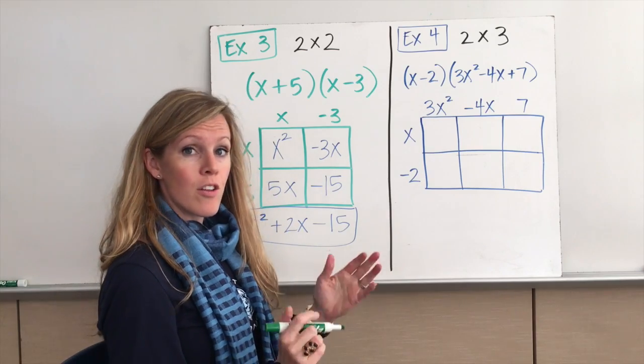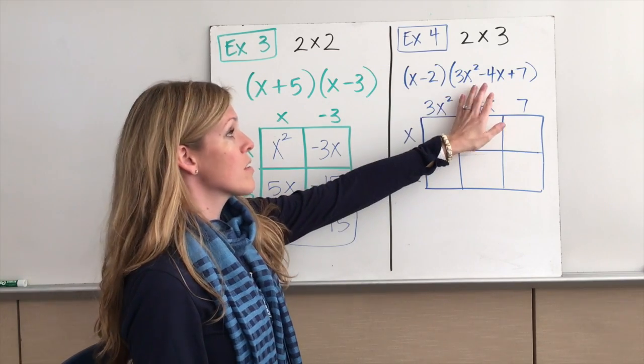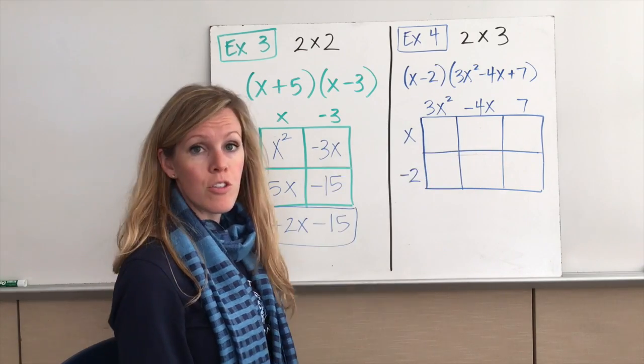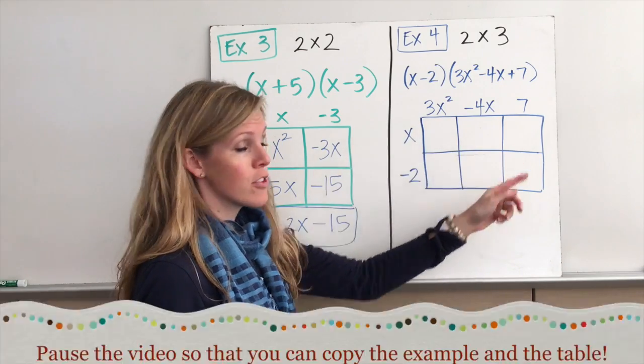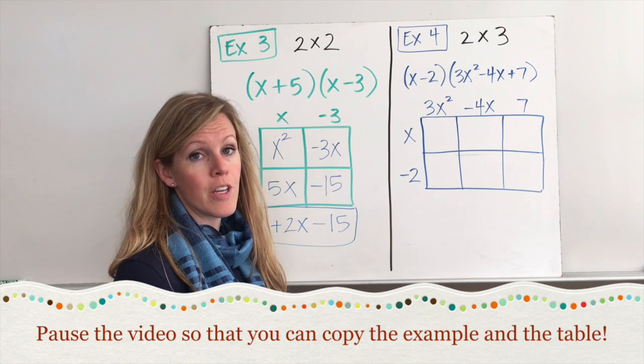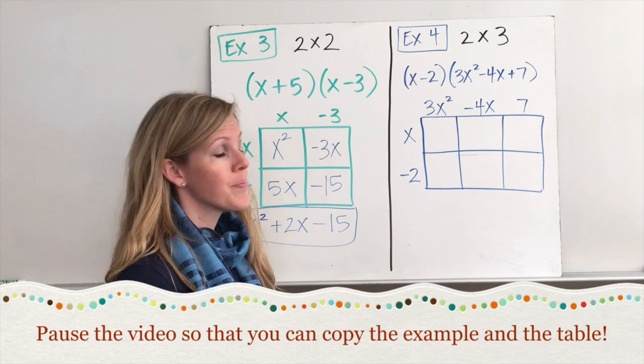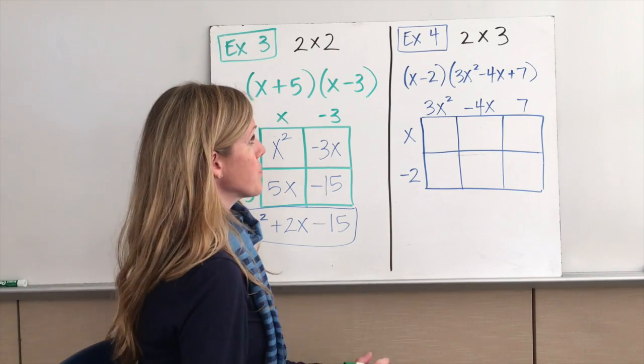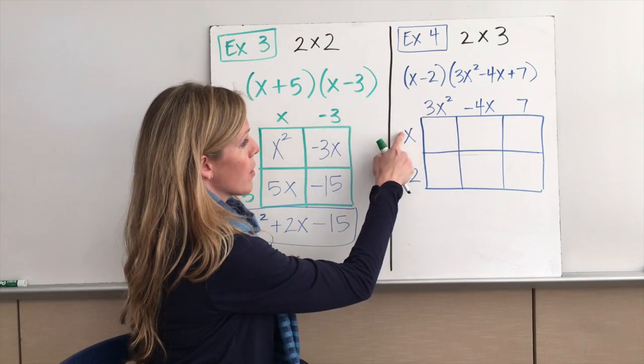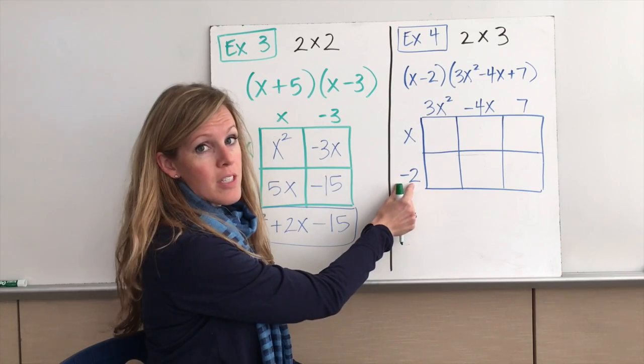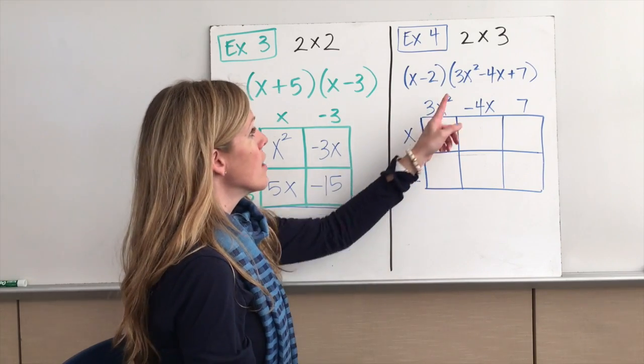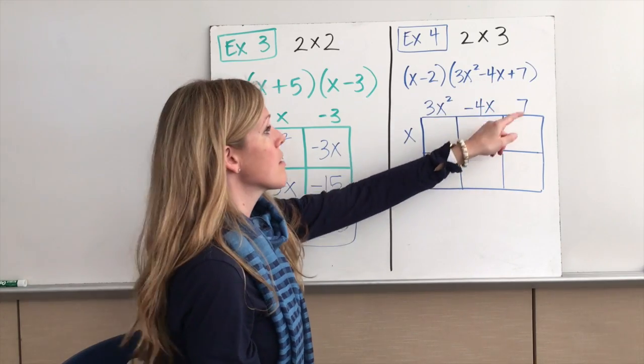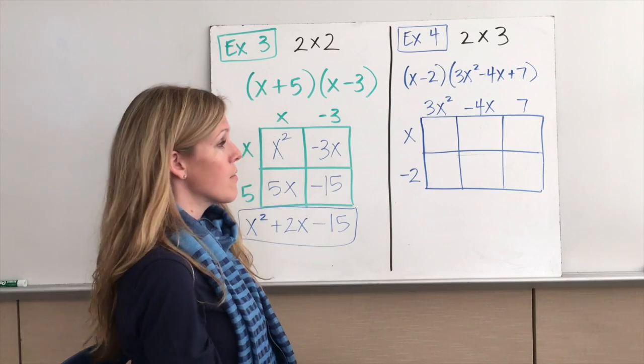All right, it starts to get a little more complicated when we've got a binomial times a trinomial. A lot to keep track of here. So again, we're going to make our two-way table for the binomial and the trinomial. Pause the video now if you need to to make sure you get this in your notes so you can follow along. All right, hopefully you paused and have written this down. So notice I took the first binomial (x - 2). I wrote that as a -2 along the left side. 3x² - 4x becomes a -4x. And positive 7 is simply positive 7.